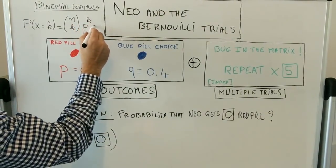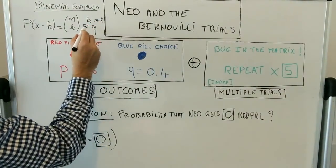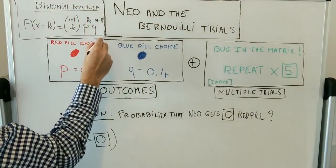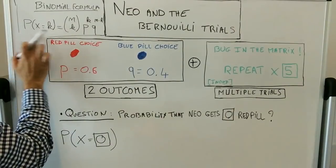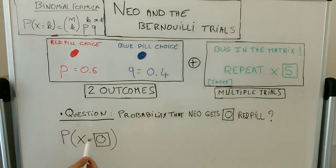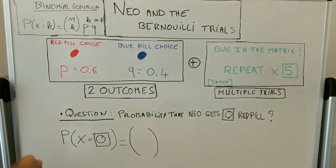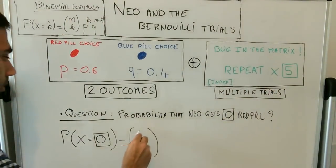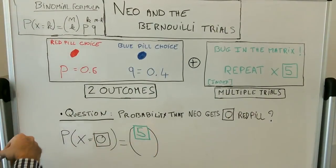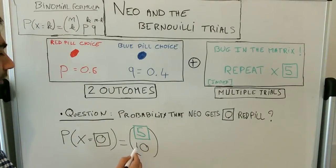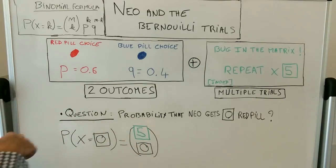So N is number of repetitions and K is number of successes. The full formula is: N choose K, times P to the power K, times Q to the power N minus K — where P is probability of success and Q is probability of failure. In our case, N is five repetitions and K is zero successes.